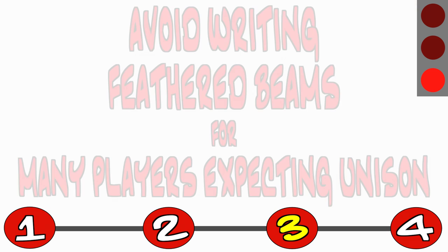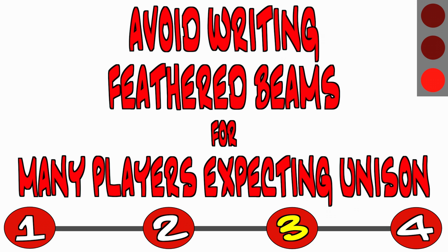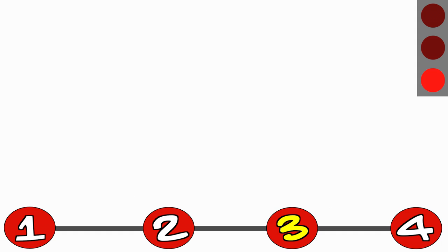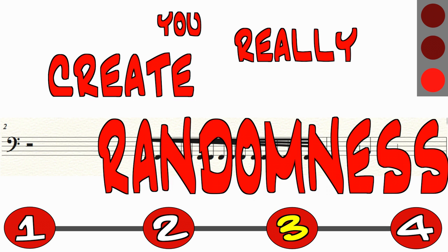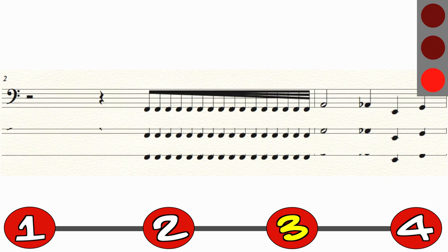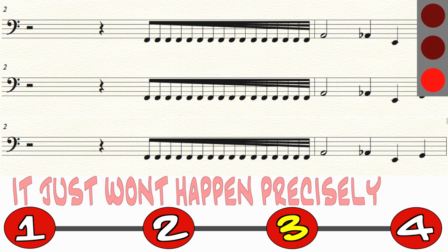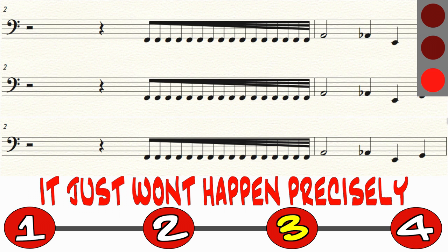The third and final don't of feathered beaming is to avoid writing feathered beams across multiple instruments with the expectation that it will sound completely in time across them. When you create randomness, you really create randomness. If you want to have multiple voices playing the feathered passage at the exact same time, it just won't happen precisely. It will be close, but likely never exactly in unison.